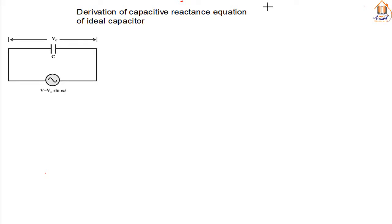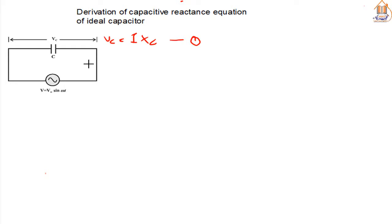From Ohm's law, we know that our VC — that is, voltage across the capacitor — is given as I times XC. Let's call this equation 1. And we know that the potential difference across the capacitor is given as VC is equal to charge Q all over C. Equation 2.